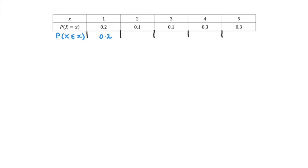For the next value, the probability that X be less than or equal to 2 will equal the probability that X equals 1, plus the probability that it equals 2. In other words, it's 0.2 plus 0.1, and that of course is 0.3.